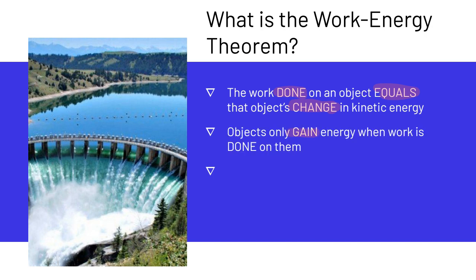Objects only gain energy when work is done on them — a gain in energy happens when work is done on the object. Similarly, objects that have energy can do work. We're going to look at a few examples where an object gains energy from having work done on it, and where an object that has energy can do work.